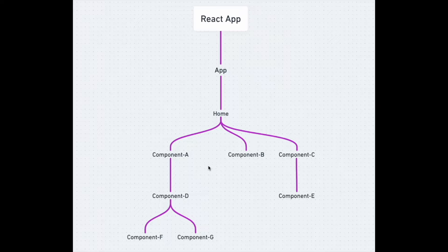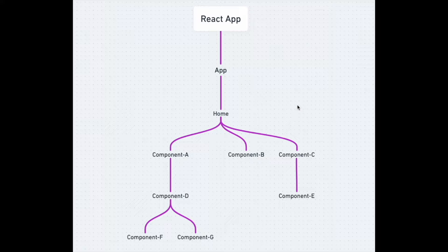But as discussed earlier, while working with large-scale projects, passing data from one node to another just to make it accessible to a child node may not be the best practice. In this case, we can use the useContext hook, where it holds all the updated values and any component within the component tree can access the updated value on demand. This is the basic principle of the useContext hook.